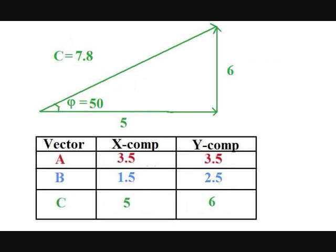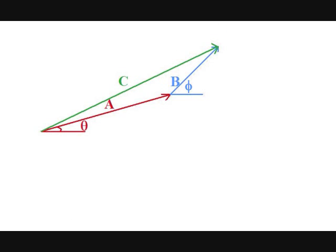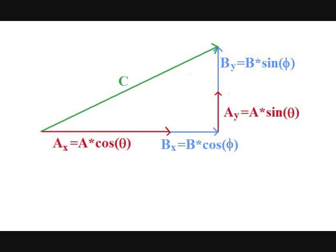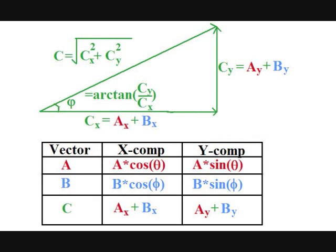This process will be involved in most physics problems you will encounter at this level, so I cannot understate the importance of knowing this process inside and out. To add two vectors: first break each vector into its components. To break a vector into components, superimpose the Cartesian axes onto each vector individually with the tail at the origin. The angle is the one between the vector and the x-axis — call it theta. The x component is the magnitude times cosine of theta, and the y component is the magnitude times sine of theta. Do the same for the other vector. Add the respective components together to get the components of the final vector. Then convert from component form to magnitude-direction form using the Pythagorean theorem to get the magnitude and the inverse tangent to get the angle above the horizontal.